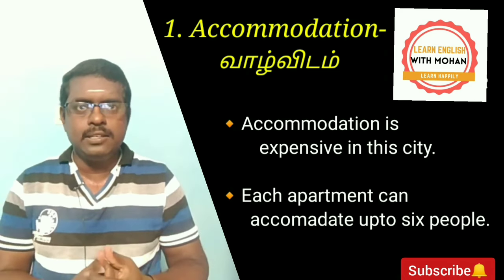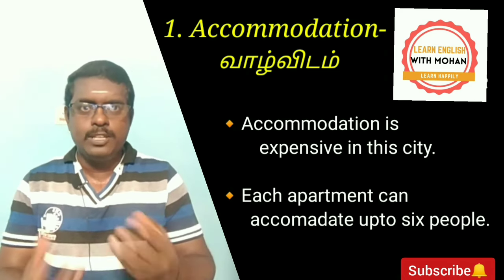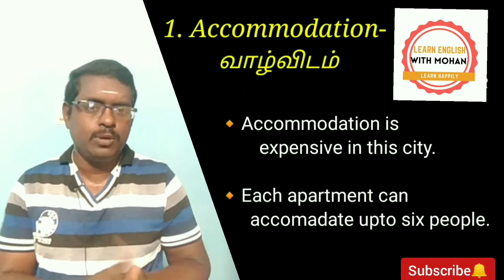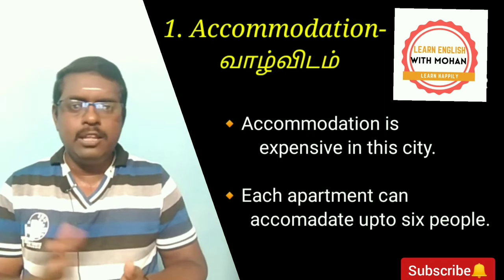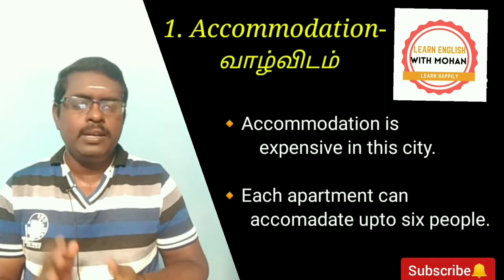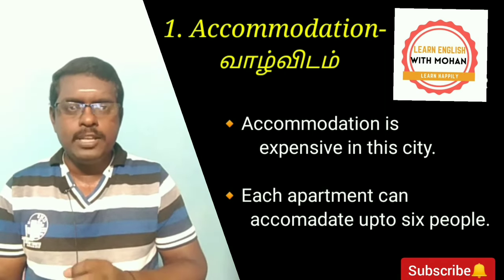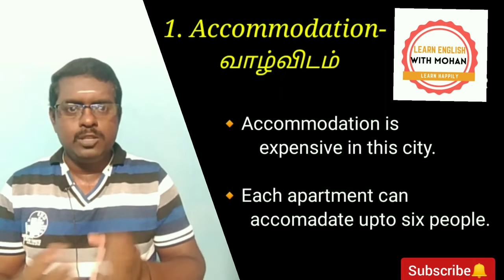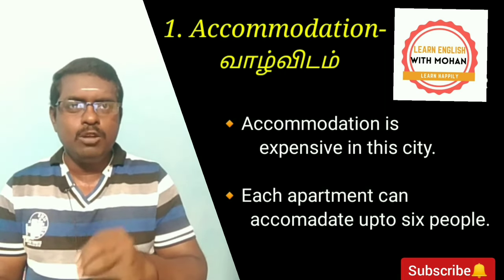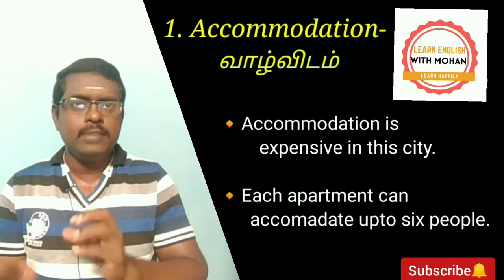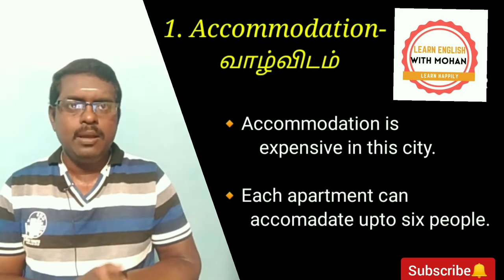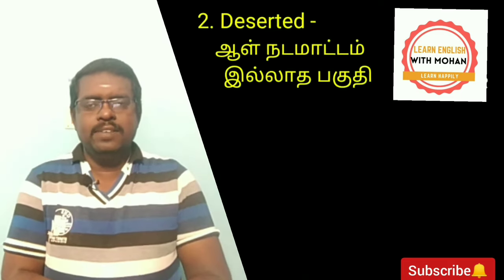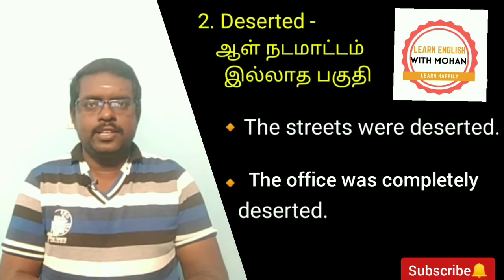In the city, kudi irippu rent is romba high — very expensive. Another example: each apartment can accommodate up to six people.